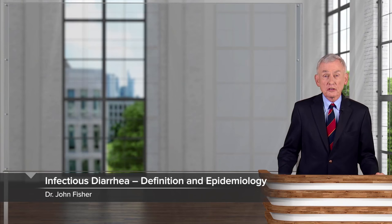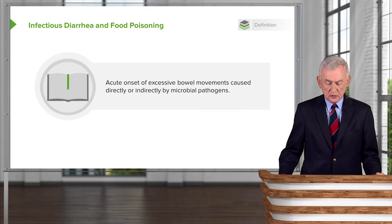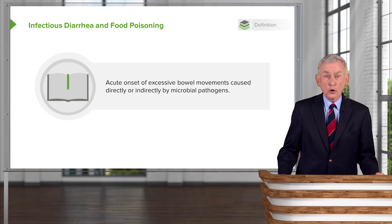In our discussion of gastrointestinal tract infections, we come to the very large topic of infectious diarrhea and food poisoning. We would certainly define it as the acute onset of excessive bowel movements caused either directly or indirectly by microbial pathogens.